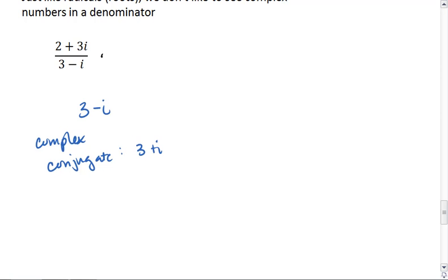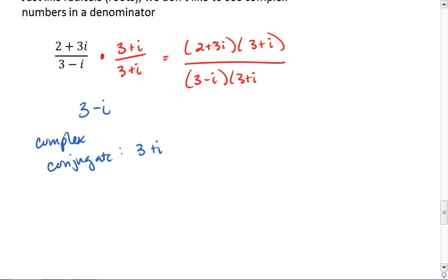We can multiply the numerator and the denominator by the complex conjugate, which gives us 2 plus 3i times 3 plus i, all over 3 minus i times 3 plus i. When we multiply this out,